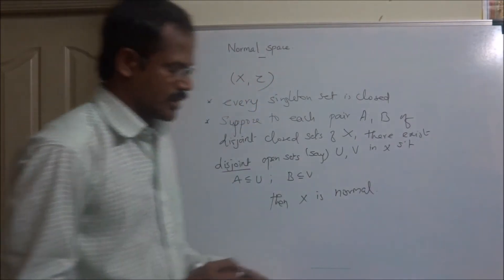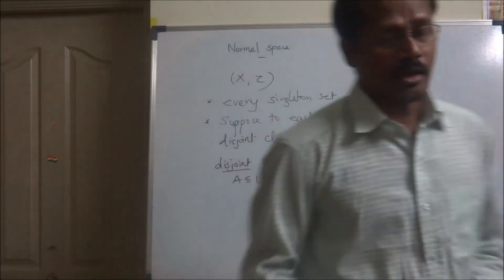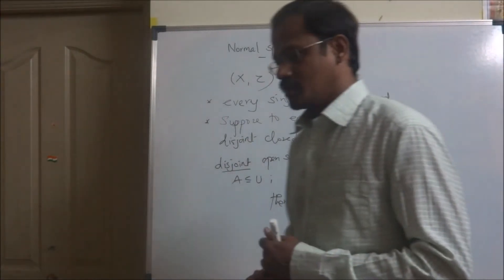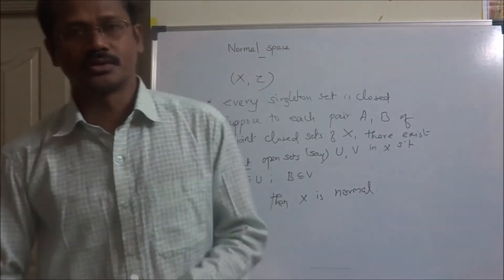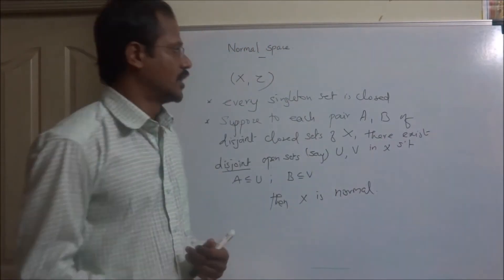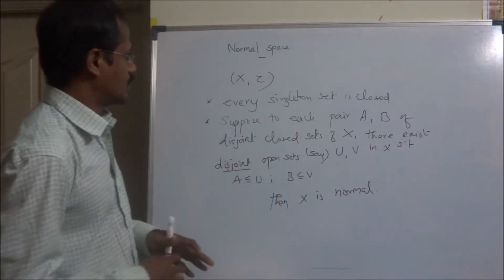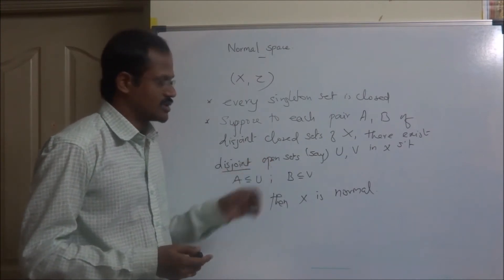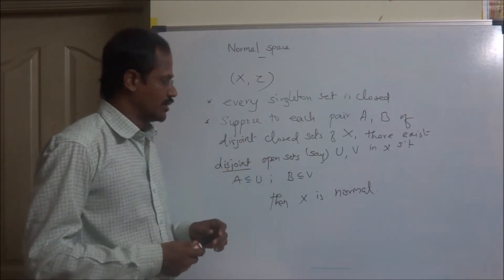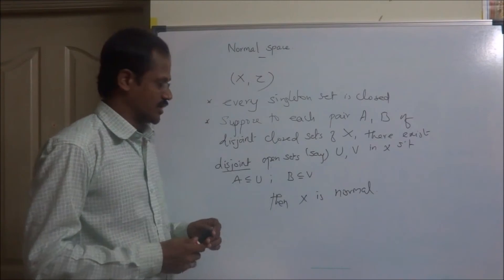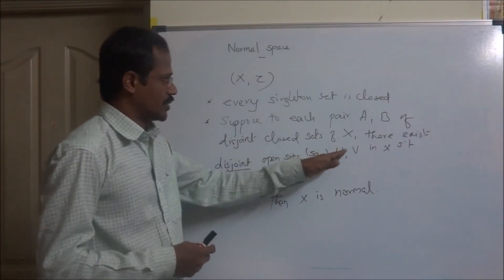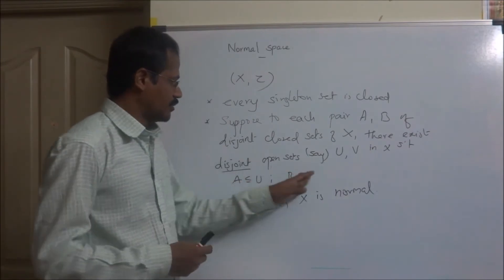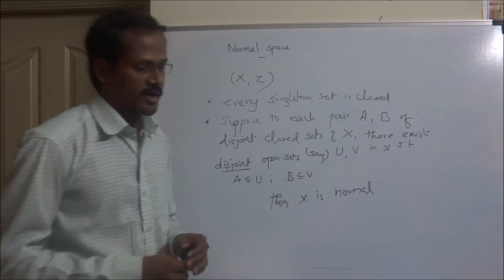That is, in order to say that the space is normal, the first condition is that every singleton set is closed in X. And the second condition is that for each pair of disjoint closed sets A and B, there exist disjoint open sets U and V containing A and B respectively.